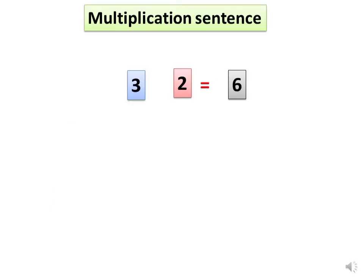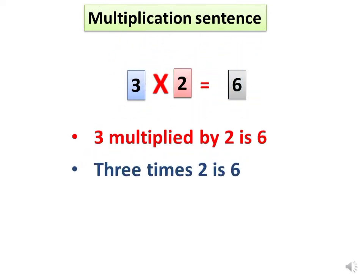Let's use multiplication symbol to write this. Cross is the sign of multiplication and it can be read as 3 multiplied by 2 is 6. 3 times 2 is 6.